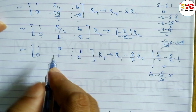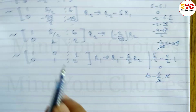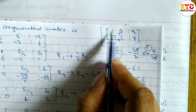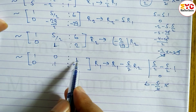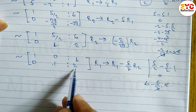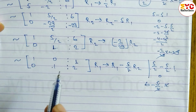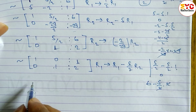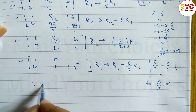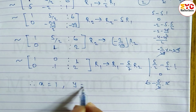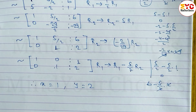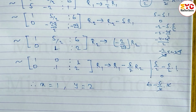We can now write the identity matrix: 1, 0, 0, 1. This part of the identity matrix is complete. Therefore, x is equal to 1 and y is equal to 2 is your answer.